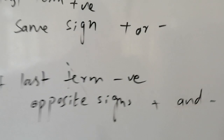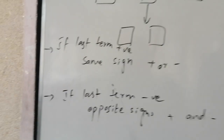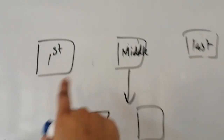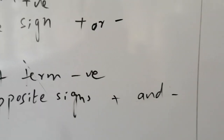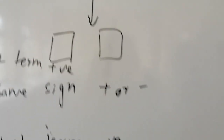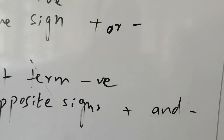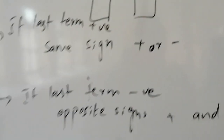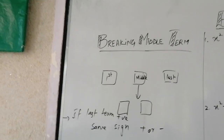Opposite signs means: if the middle term is plus, the larger value gets the plus sign and the other gets minus. If the middle term is minus, then the larger value gets minus and the other gets plus. This is the procedure for breaking the middle term.